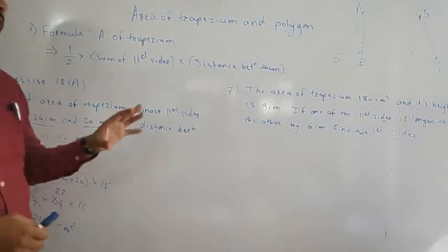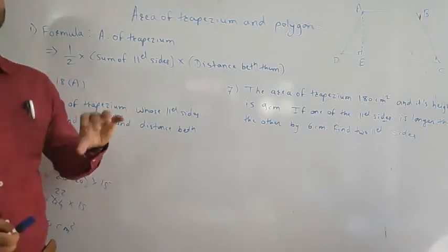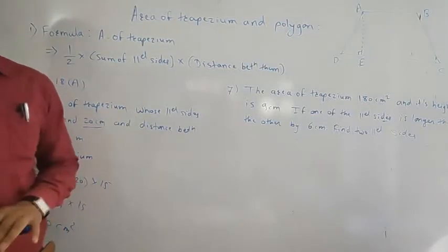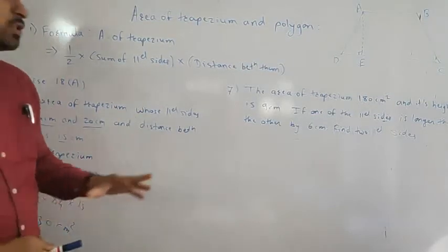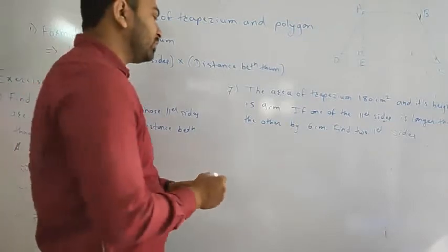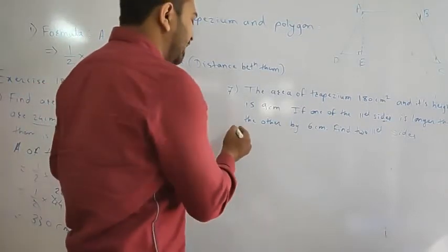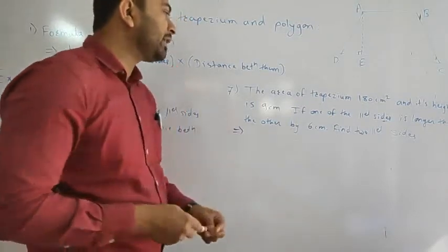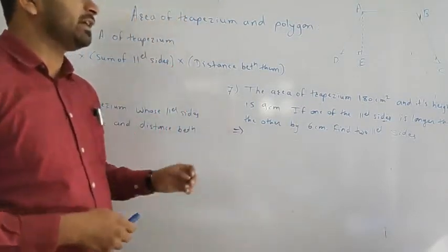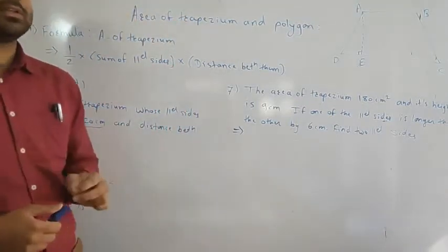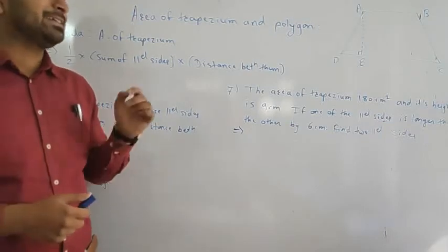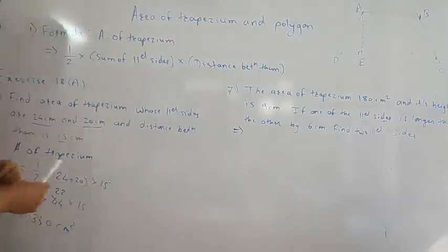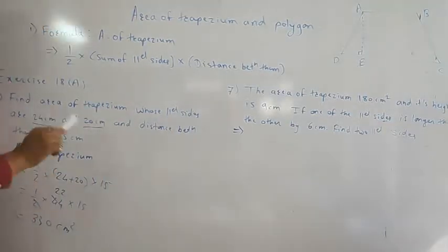This problem is a bit different and requires some extra thinking to solve. The numerical is like this: the area of a trapezium is 180 centimeters squared — meaning the area is already given.